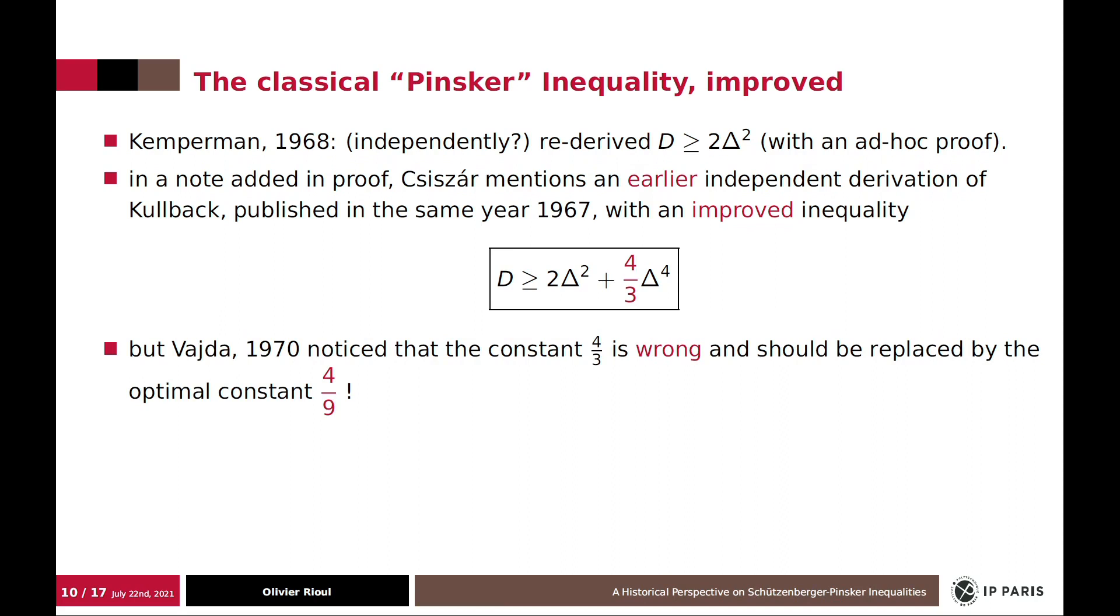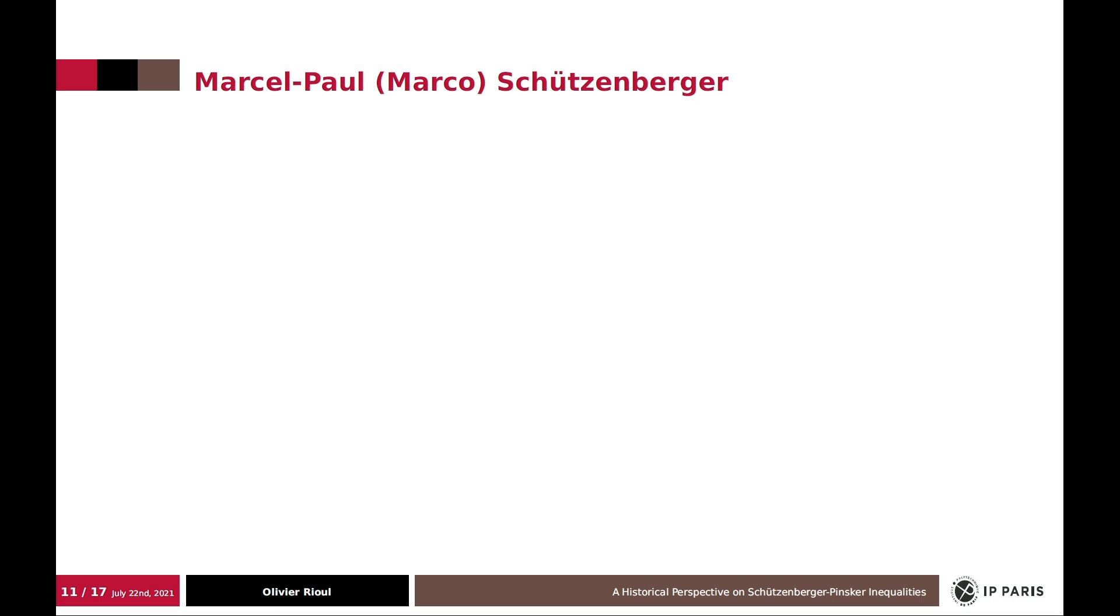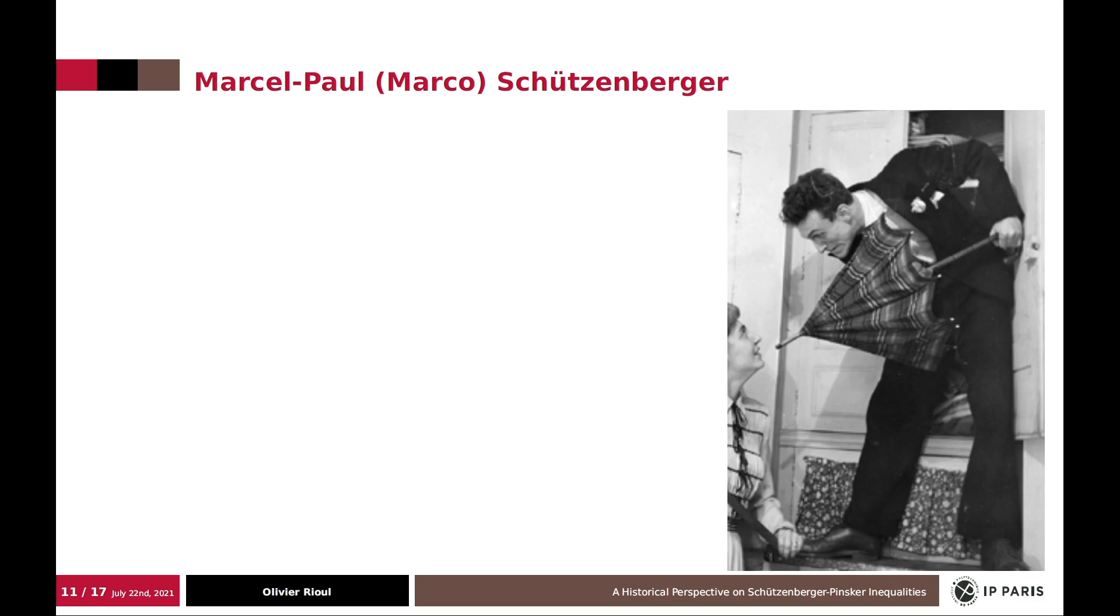And this was discovered by Vajda in 1970 and had to be replaced by the optimal constant 4 over 9 instead of 4 over 3. So what happened? Actually, what happened was that Kullback copied an earlier derivation in a French thesis written in 1953 by this guy, Marcel Paul Schützenberger, which I would like to talk about a little bit because he's a very interesting character.